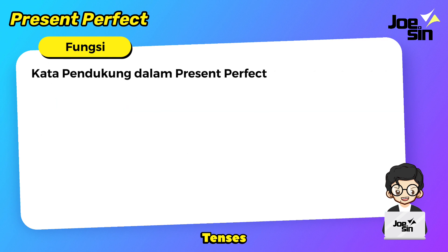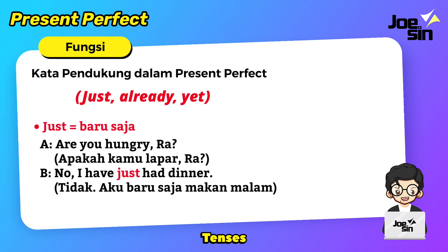Berikut ini adalah kata pendukung dalam present perfect tense. Yang paling sering yaitu just, already, dan yet. Ketiga kata ini bisa digunakan untuk mendukung konteks dari tenses ini. Contoh pertama, just — baru saja. Are you hungry? No, I have just had dinner — tidak, aku baru saja makan malam. Kata just terletak di antara auxiliary verb have dan kata kerja bentuk ketiganya had. Jadi: I have just had.